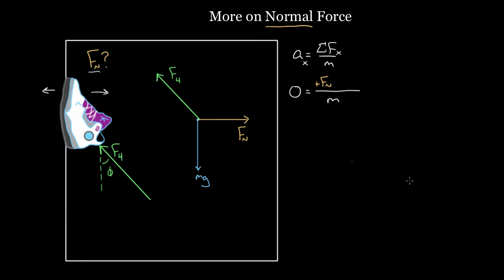And I've got this F4, part of it points to the left, so just like before, I've gotta break this force up. I've gotta figure out how much of this force points horizontal and how much of this force points vertical